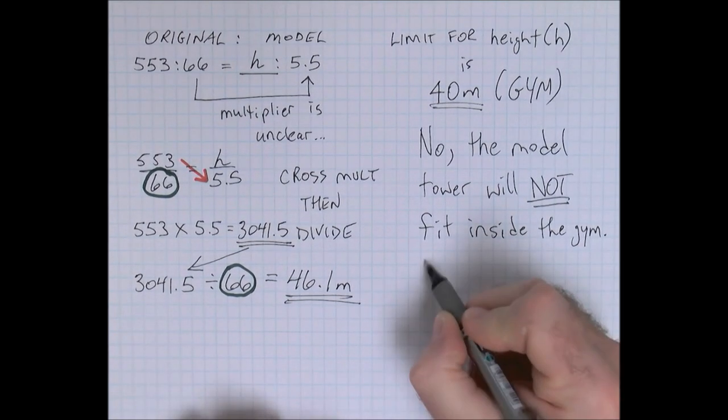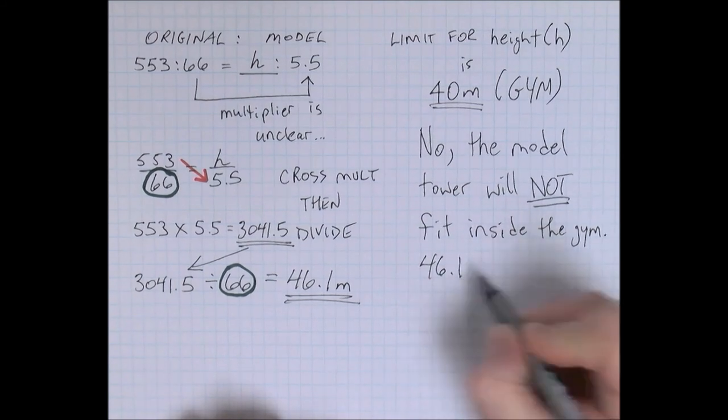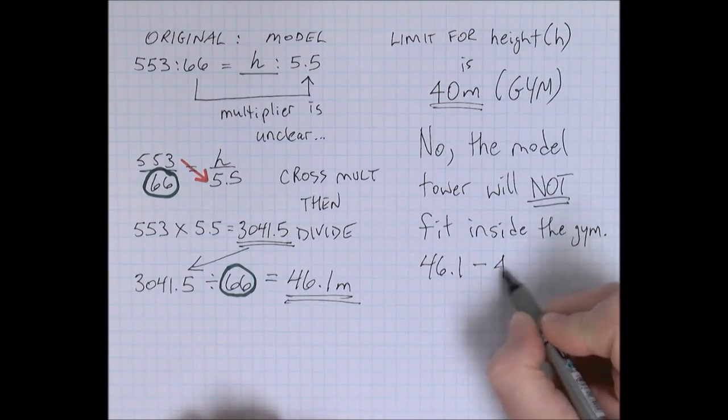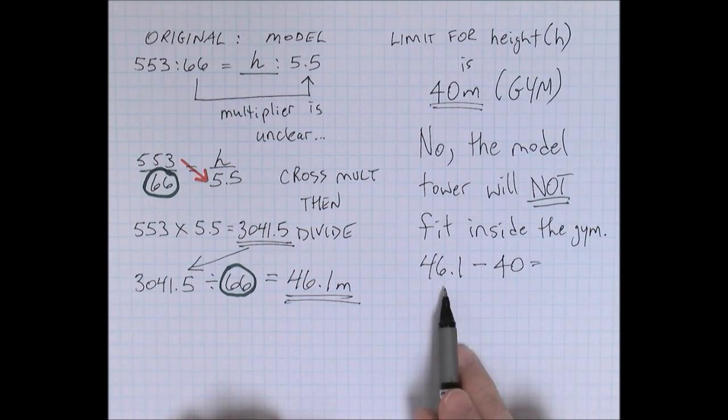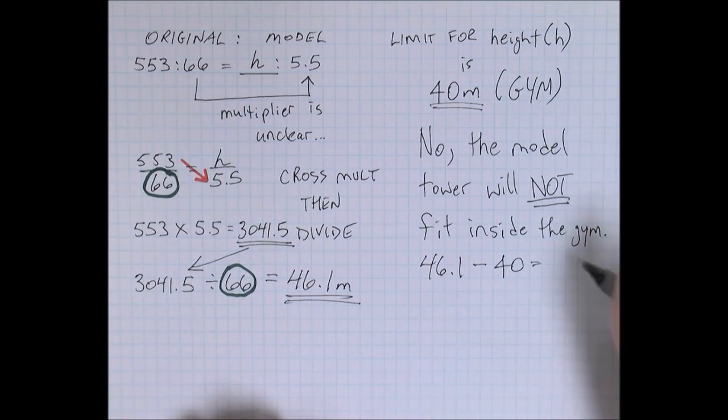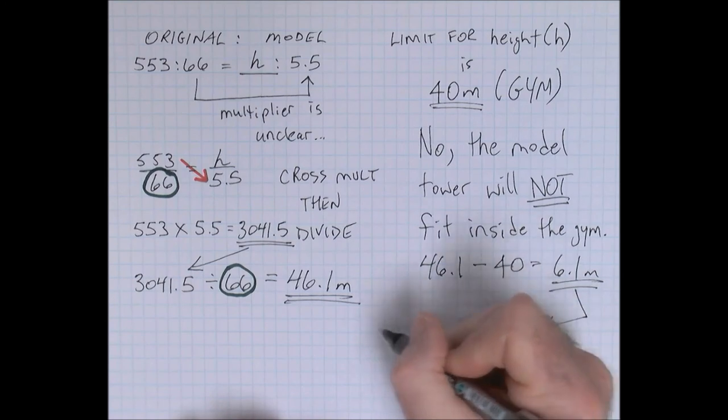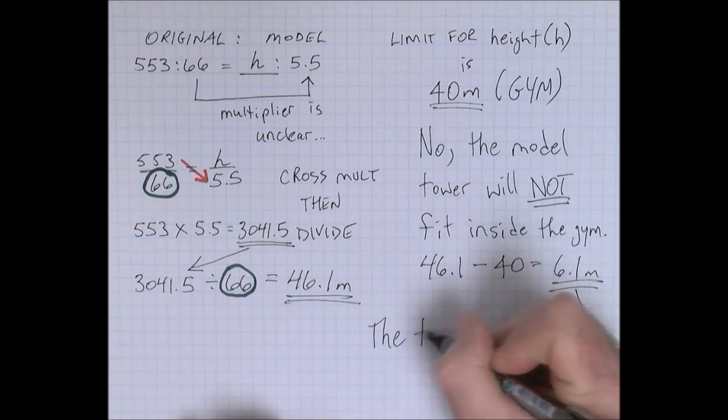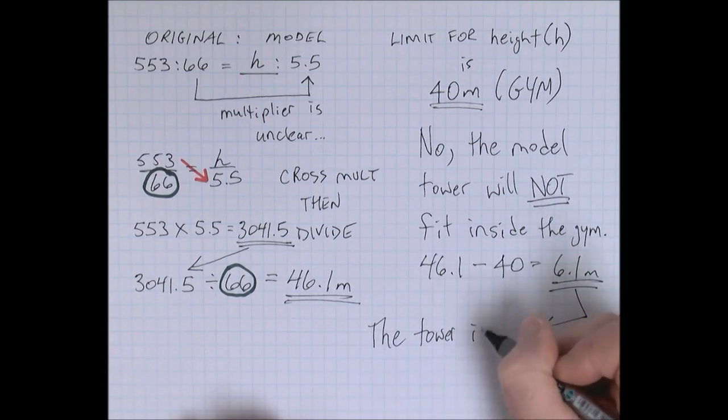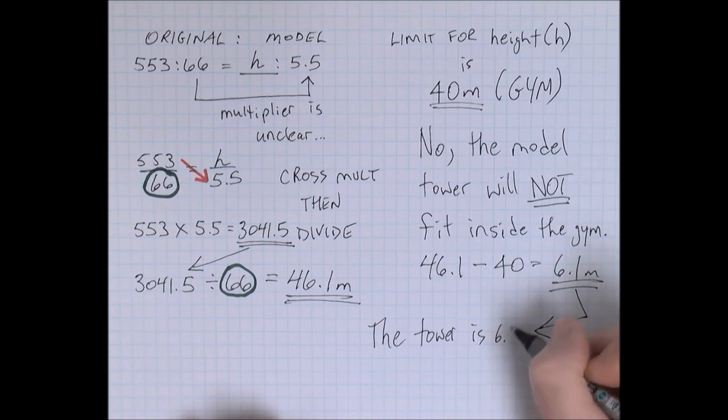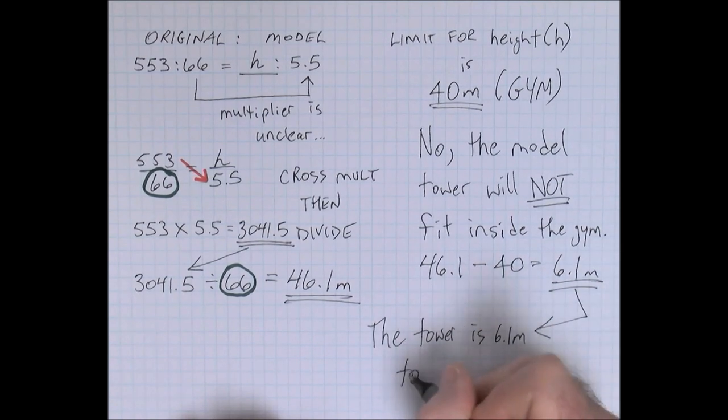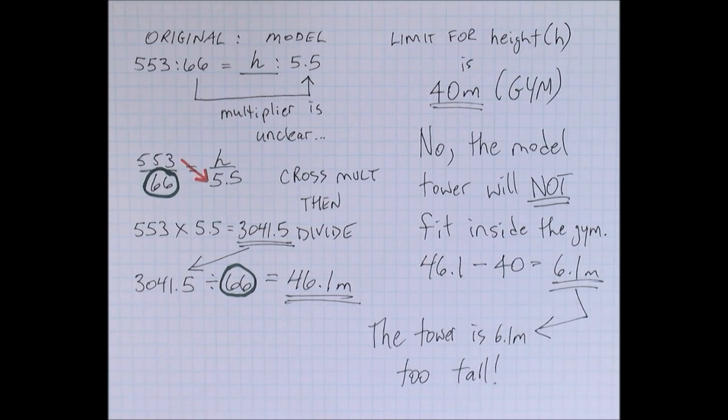If you want to show some justification, subtract the limit from the height of the tower model, and you can be even more descriptive in your answer. And you could say that the tower is 6.1 meters too tall.